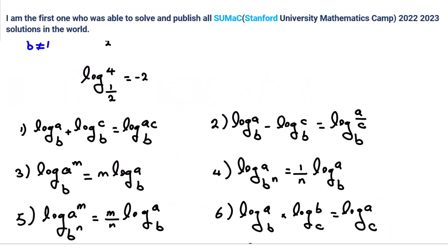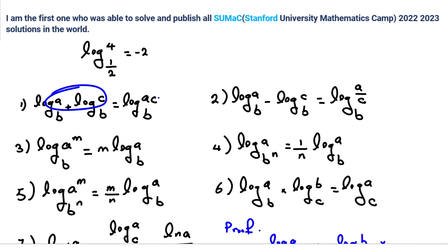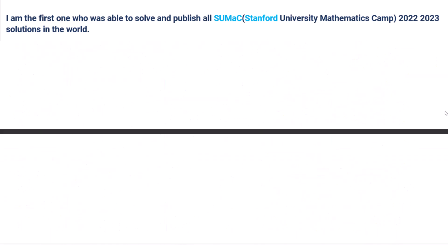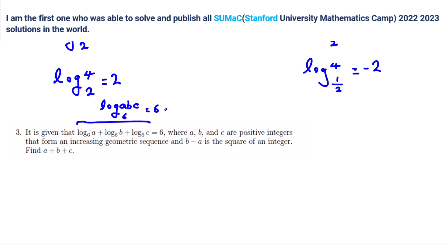So, from here, what can we conclude about ABC? ABC is equal to what? 36. 6 to the 6, right?